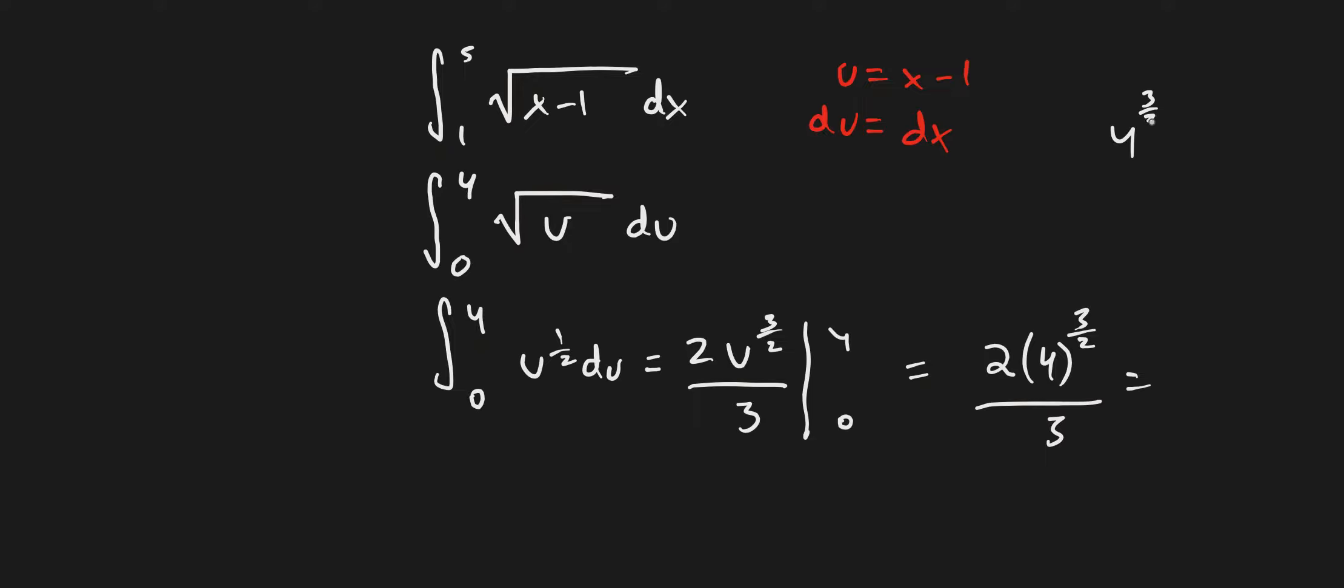So 4^(3/2) is equal to (4^(1/2))^3. 4^(1/2) is √4, which is 2 cubed. 2 times 2 is 4, 4 times 2 is 8. This equals 8.